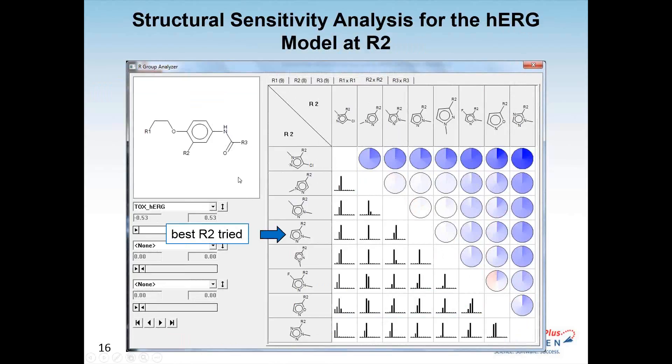This is the structural sensitivity analysis for the HERG model at R2. The best substituent is in fact the one that they tried, which is the substituent at the nitrogen that's right next to the substitution point. The best R2 shows up here as being blue to white. However, it's not the best potential one. These are the only two that were actually tried. You can see you get some improvement by replacing the chloro with the hydrogen.